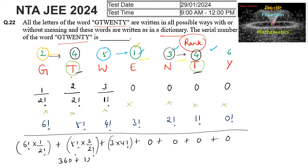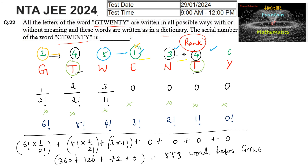2 factorial is 2, so 1 into 5 factorial is 120, and 4 factorial is 24, so 3 times 24 is 72, plus 0. So we can say 360 plus 120 is 480, plus 72 is 552. Before TWENTY there are 553 words, so the rank will be 553 plus 1, that is 554. So 554 is the answer.